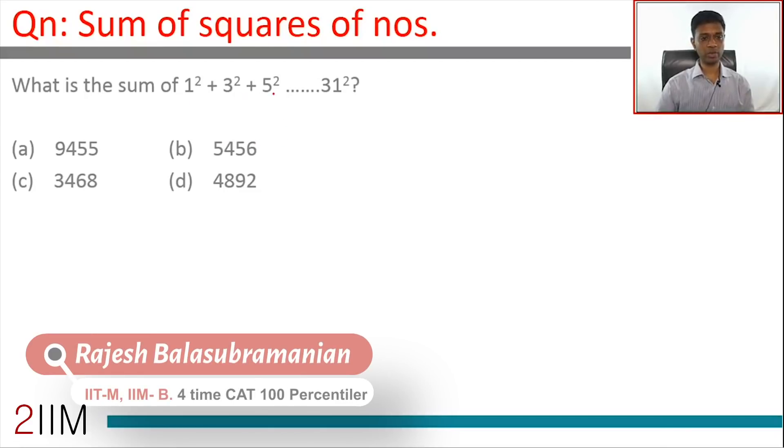What is the sum of 1² + 3² + 5² all the way to 31²?